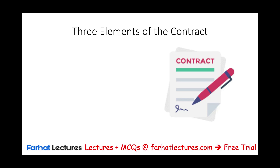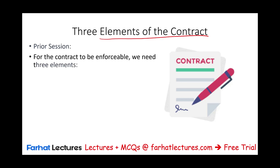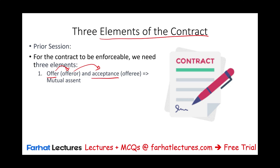Hello and welcome to this session in which we'll keep on discussing the elements of the contract. To have an enforceable legal contract, we have to have certain elements, specifically three. Those are offer and acceptance — an offer by the offeror, the person making the offer, and it has to be accepted by someone else, the offeree. This gives us mutual assent, basically mutual agreement between the two parties.